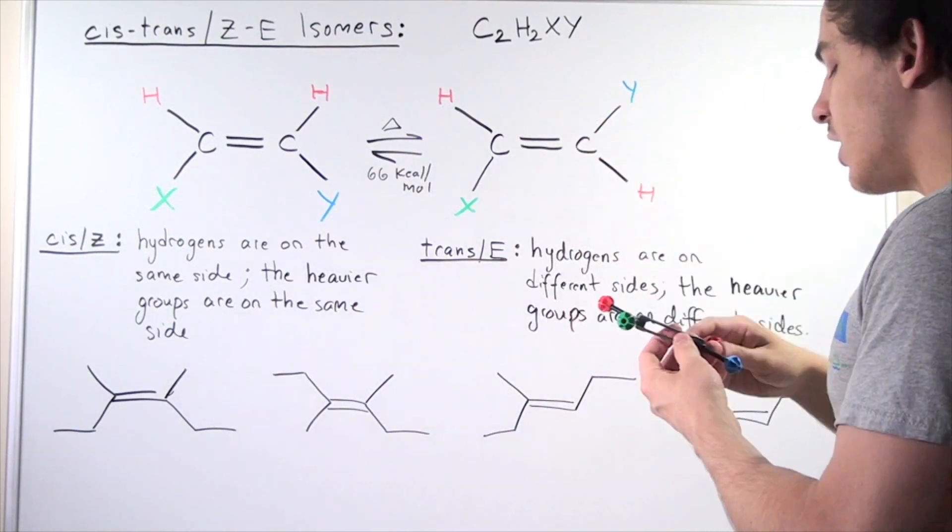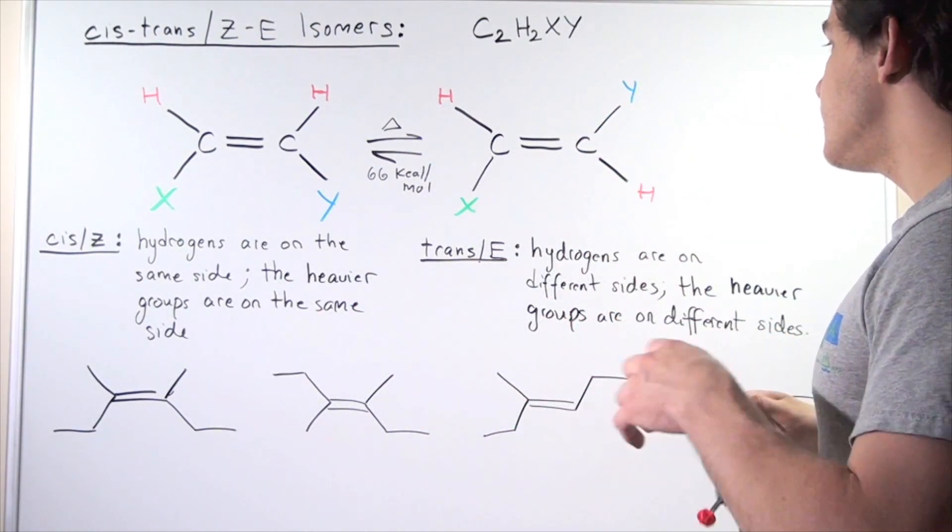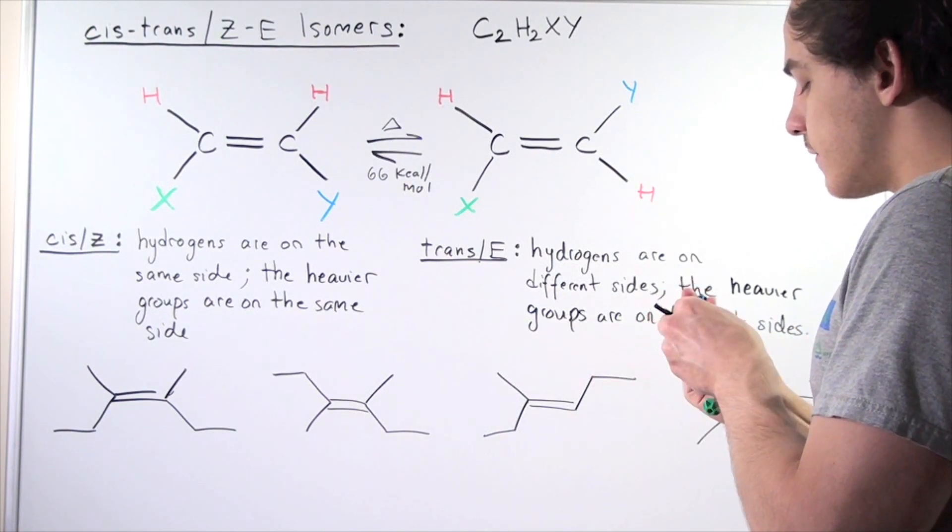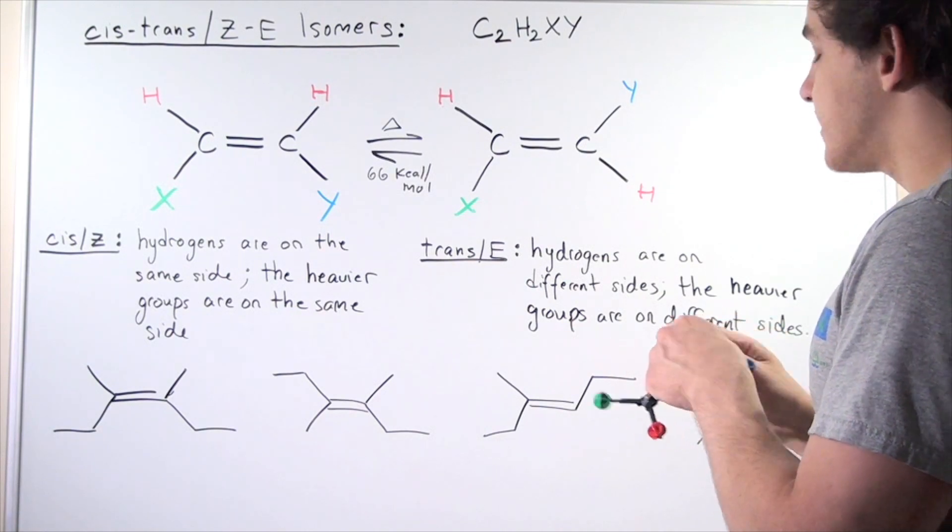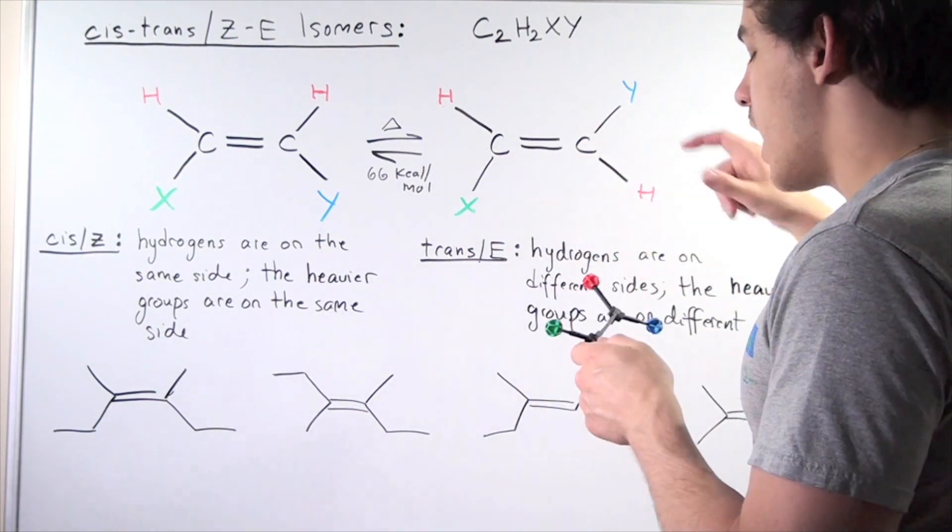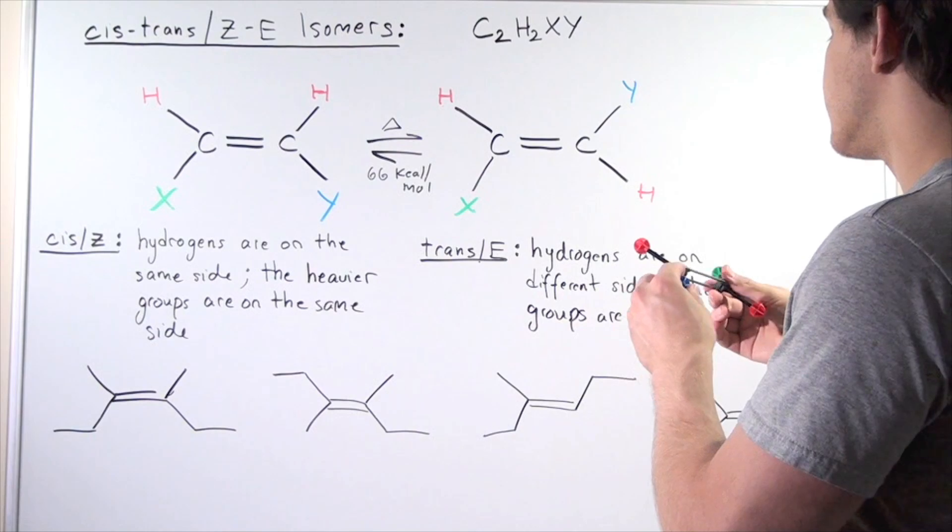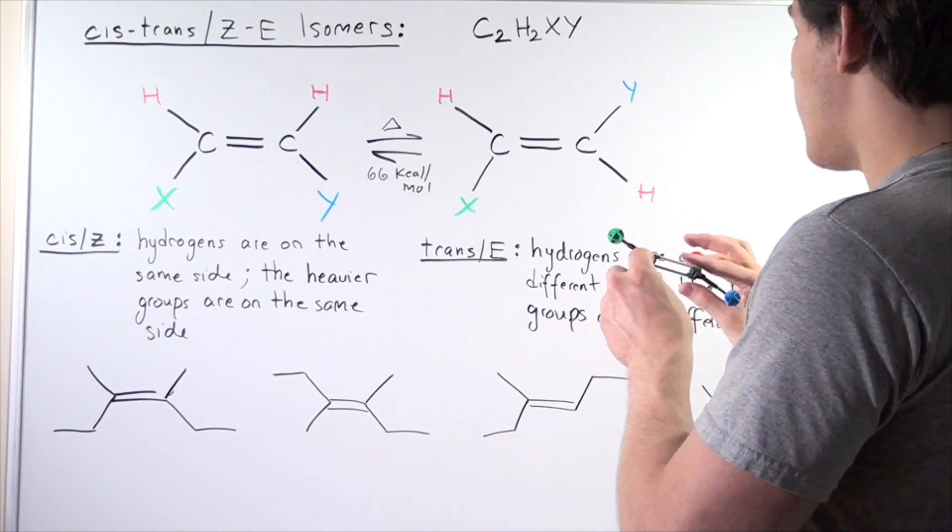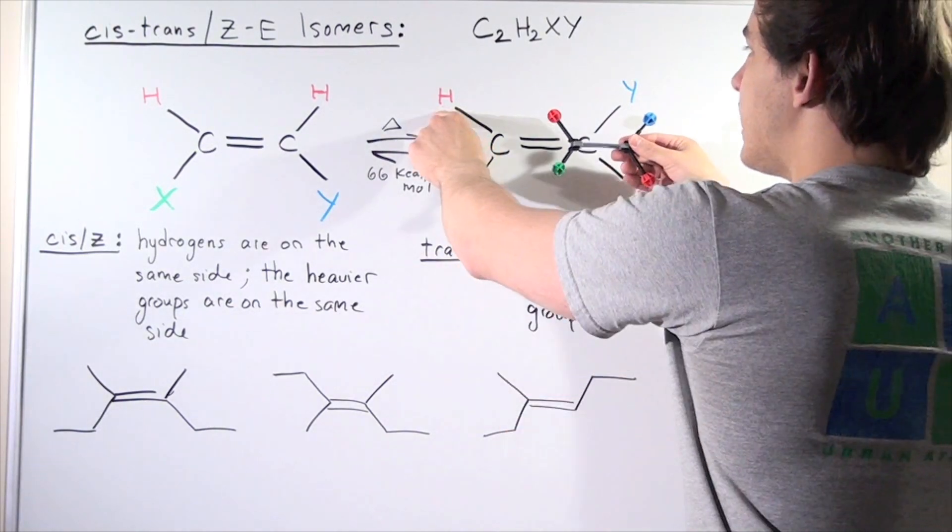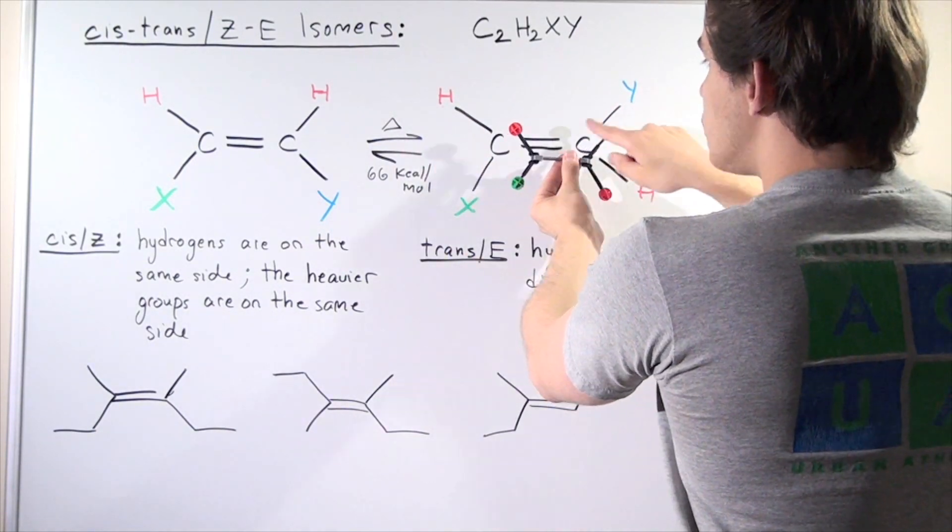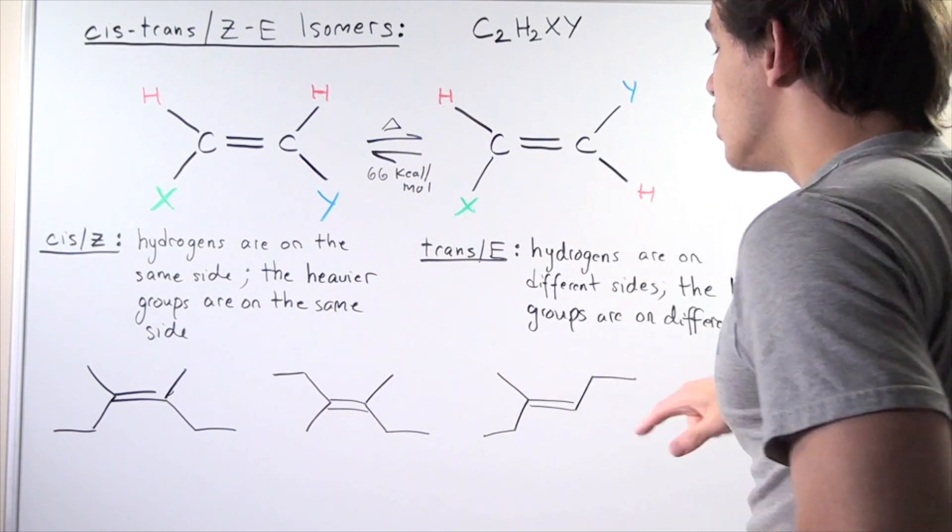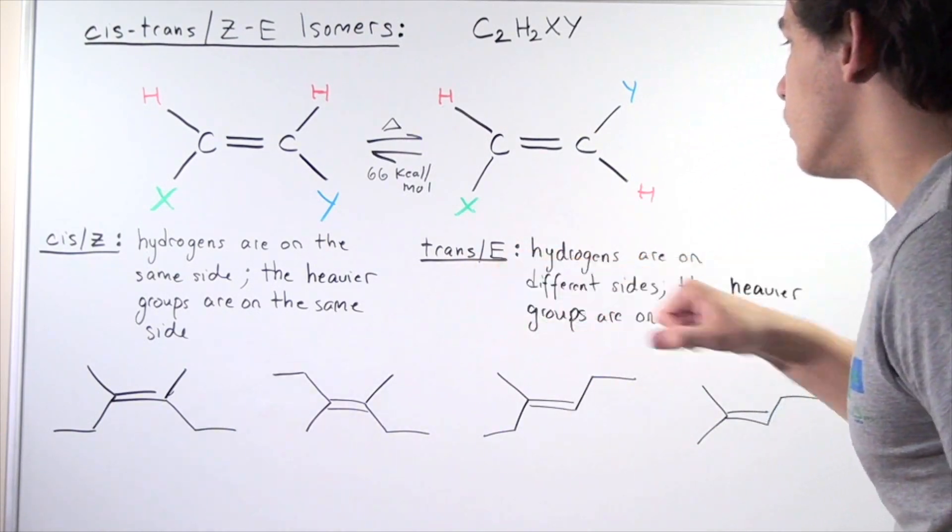So in this molecule, we have the H's are on the opposite sides, and the X and Y are also on the opposite sides. So we have the following picture. So we have the two H's being on different sides, and we have the Y and the X also being on different sides.